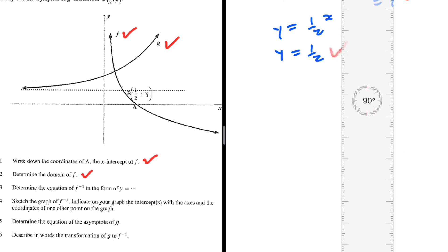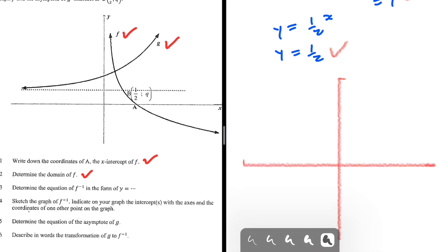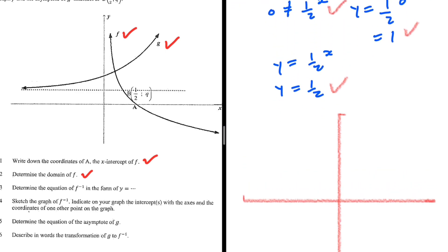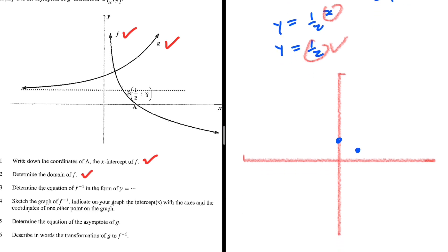Let's sketch that. We have the y-axis and the x-axis. The y-intercept is at (0, 1) and our other point is at (1, one half). The graph passes through these and curves down toward the x-axis. We know that one half to the power of x cannot be negative, so we cannot go below that line — the graph stays above it. That is the sketch of f inverse for 6.4.